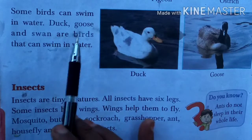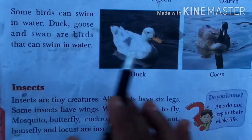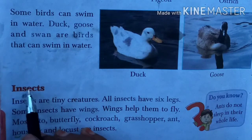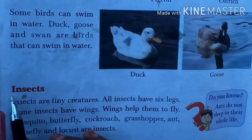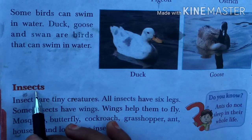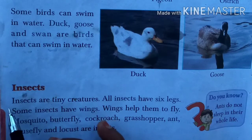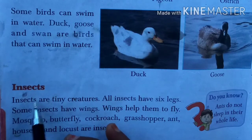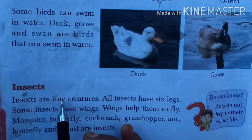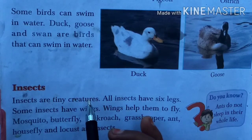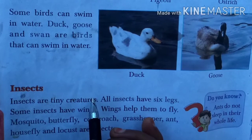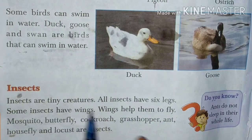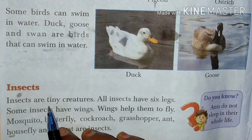Now you can see the pictures. Yes students, I hope all of you have seen these pictures. Now we are going to start insects. Insects means jo keede hote hain unko hum kehte hain insects. Insects are tiny creatures — tiny means chhote, creatures means jeev hote hain.